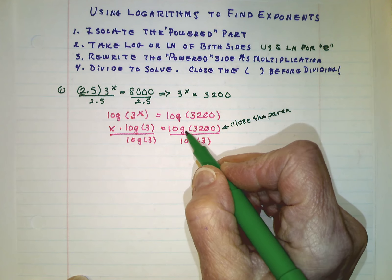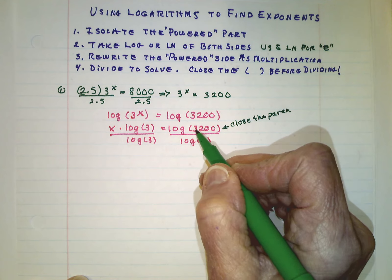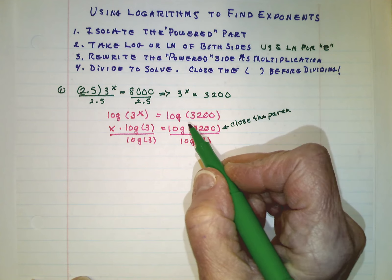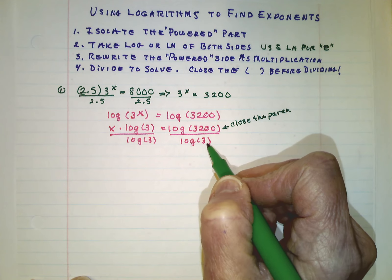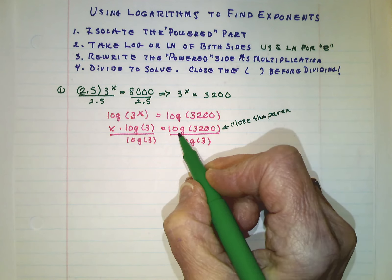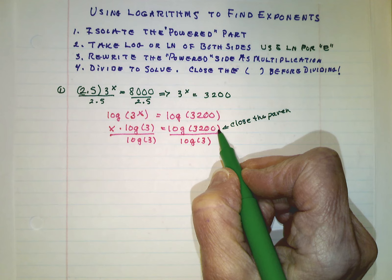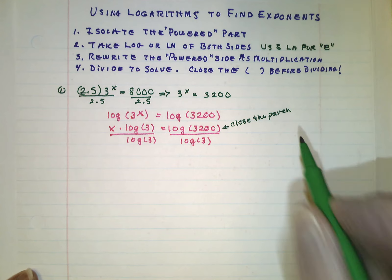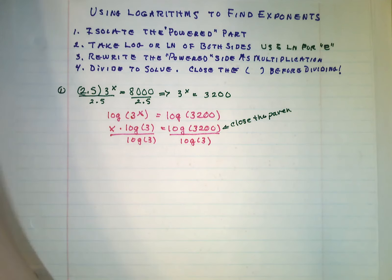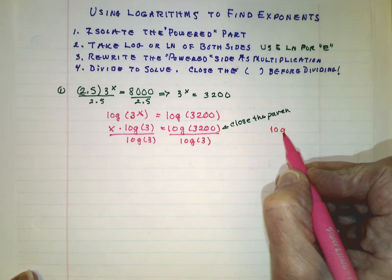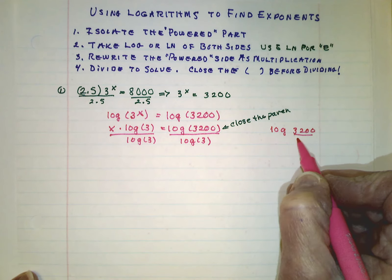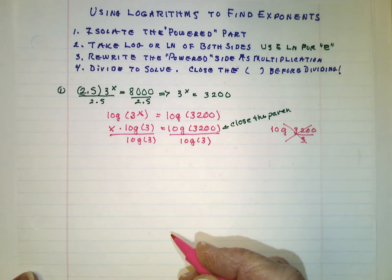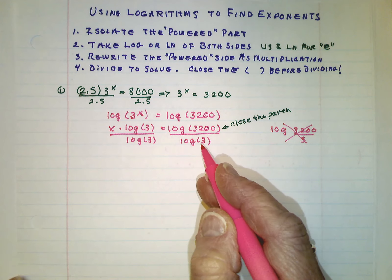Calculators will usually come up when you press the log key with an open parentheses. You fill in the number and then you close the parentheses before you do the dividing. Otherwise, it will take the log of 3,200 divided by the log of 3 rather than the answer to the log of 3,200 divided by the answer to the log of 3. Another mistake I've seen people make is that they write it the log of 3,200 divided by 3. Nope, don't do that. It's one logarithm divided by another logarithm.